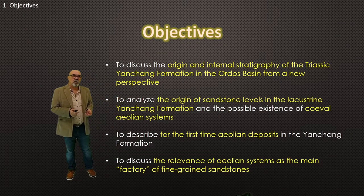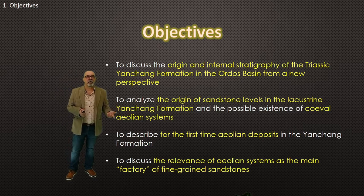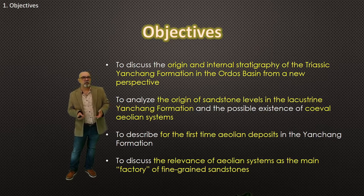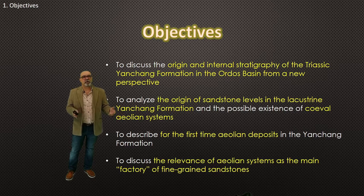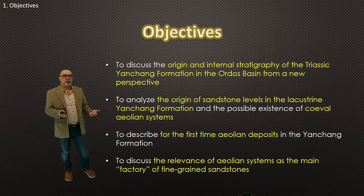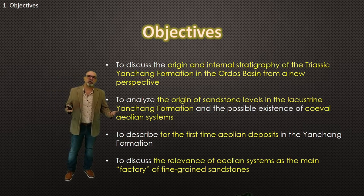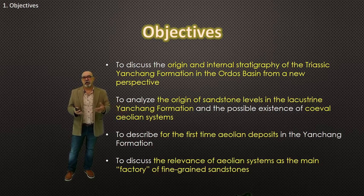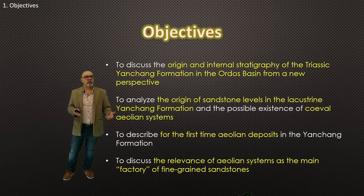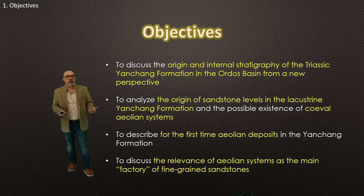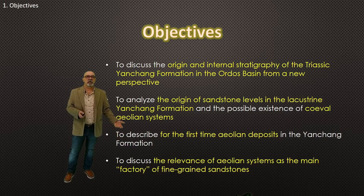The objective of this presentation is to discuss the origin and internal stratigraphy of the Triassic Yanchang formation in the Ordos Basin from a different perspective — specifically, to discuss the possible existence of a coeval aeolian system surrounding this very large lake. Aeolian systems are usually the main factory of fine-grained sands in most basins. In the Yanchang formation we have no gravels and no conglomerates, so it is very important to understand the origin of this sandstone. We will describe for the first time the presence of aeolian deposits in the Yanchang formation and discuss the importance of this aeolian system as a factory of fine-grained sandstone.